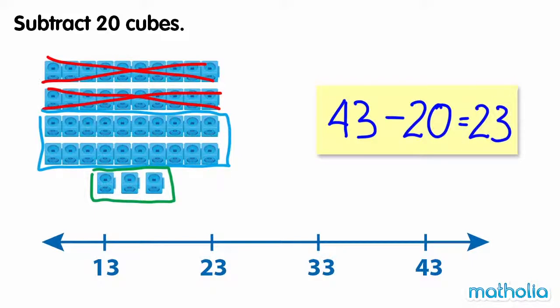We can also subtract by starting at 43 and counting back two tens: 43, 33, 23.